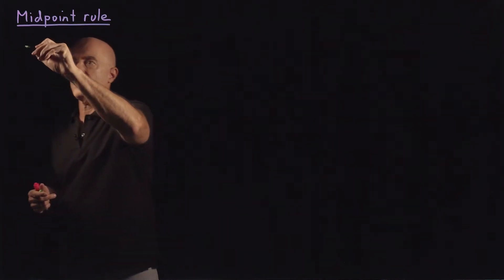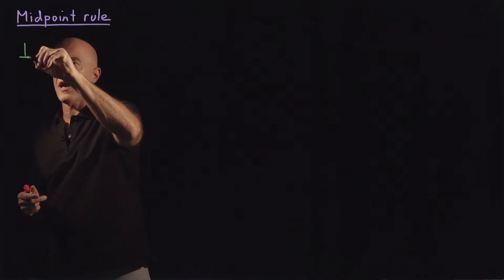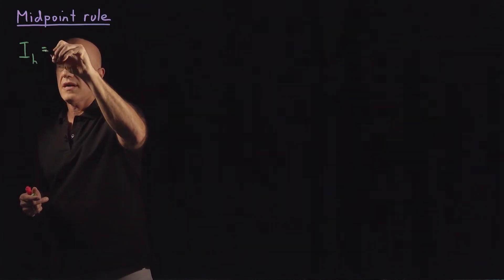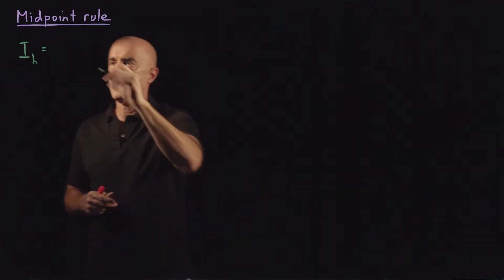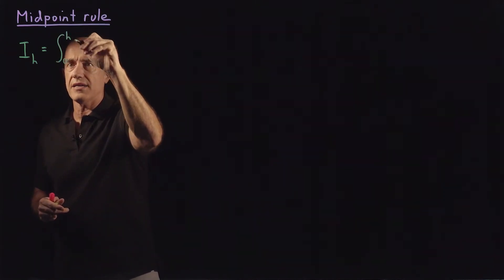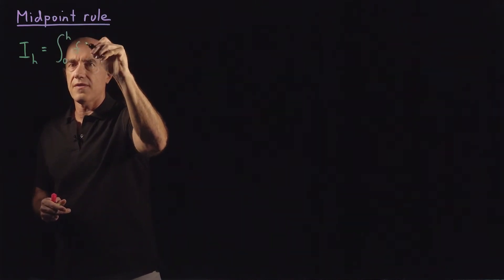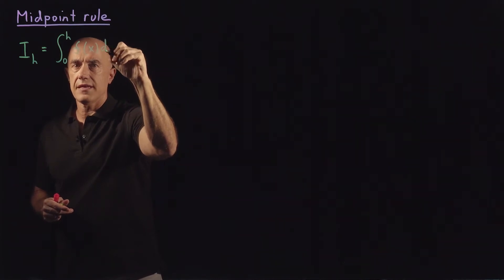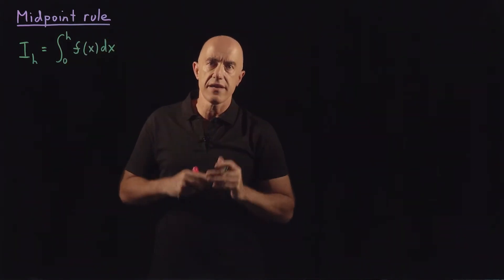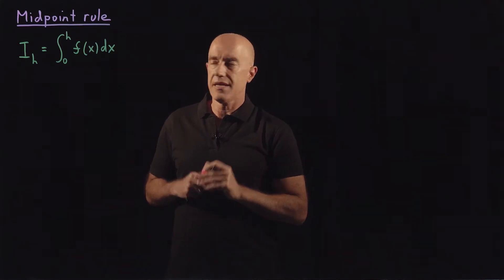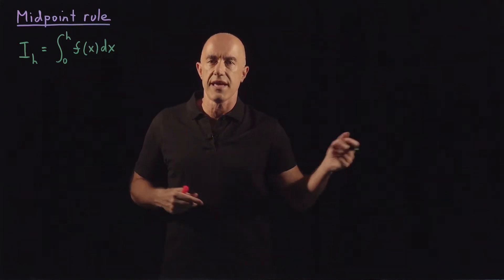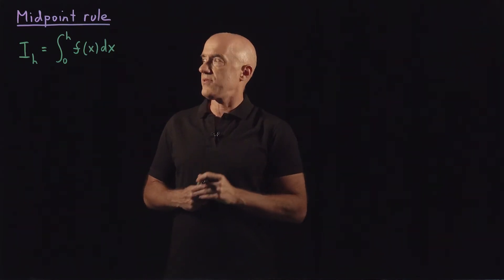Here we want to derive a formula for doing an integral. I'll call it I sub h, which will be the integral from 0 to h of f of x dx. That's a building block integral that we can use to integrate from A to B.